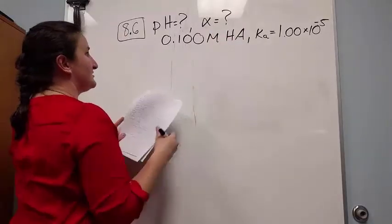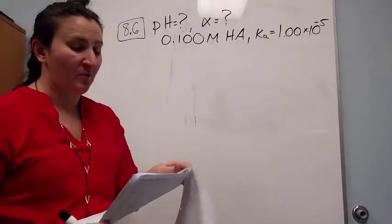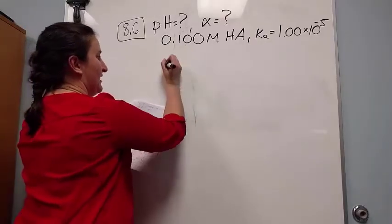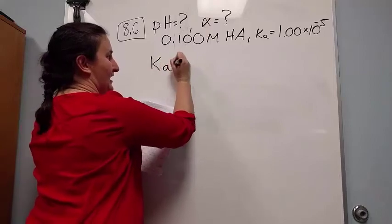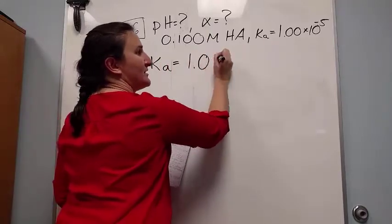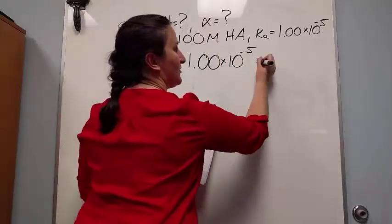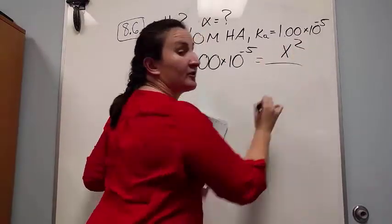So in this situation, we have a 0.1 molar weak acid, so we can make an ICE table and figure out that Ka equals 1.00 times 10 to the minus 5, and that equals x squared over F.